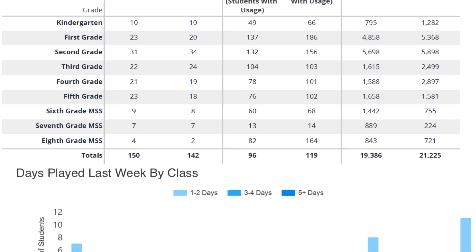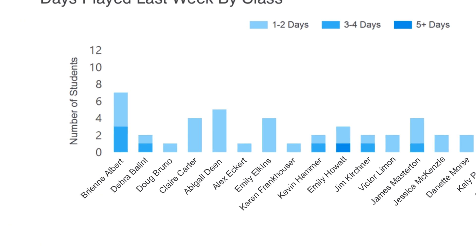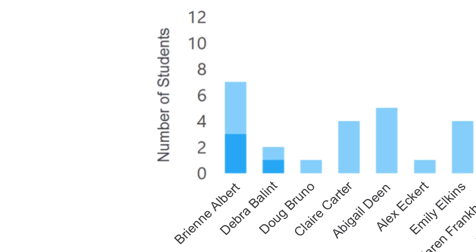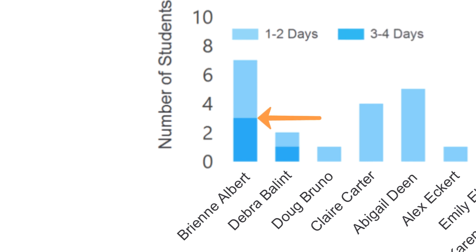The bottom graph shows all the classes that had students log in last week. The height of the bar is the number of students that logged in; the darker the bar, the more days they played. So in this example we can see that Bree's class had seven students log in last week — they all played ST Math about one to two days, and three students logged in three to four days.